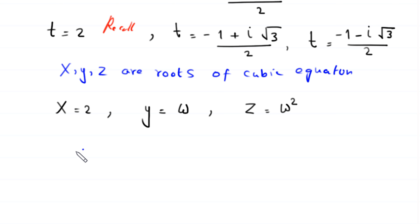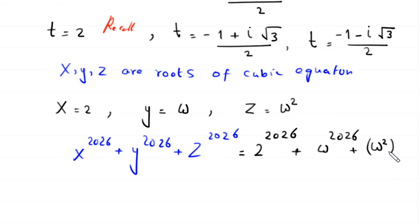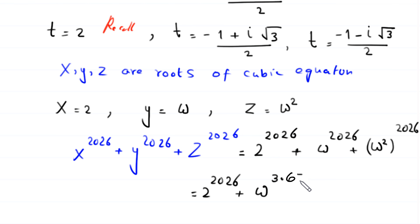Now we calculate x²⁰²⁶ + y²⁰²⁶ + z²⁰²⁶, which equals 2²⁰²⁶ + ω²⁰²⁶ + (ω²)²⁰²⁶. We note that 2026 = 3 × 675 + 1, and (ω²)²⁰²⁶ = ω⁴⁰⁵², where 4052 = 3 × 1350 + 2.